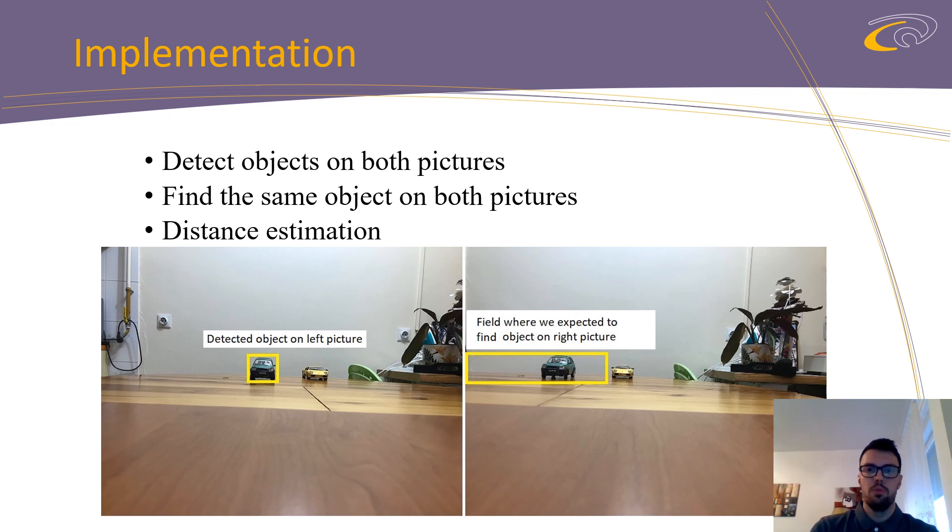The first one, both objects must be from the same class. For example, car, pedestrian, truck, etc. The second criteria is objects from the right picture must be closer to the left edge of the picture than the same objects found in the left picture. You can see that on this slide. Left picture presents objects which is on the center of the picture. But if you take a look on the right picture, you can see that the same object is closer to the left edge than the object on the left picture. And that is what we are looking for.